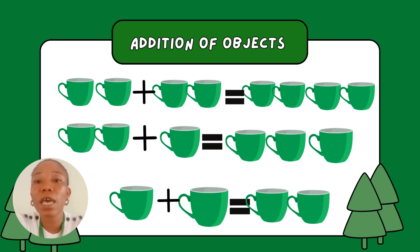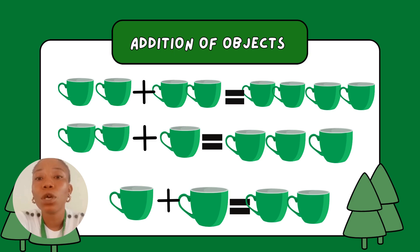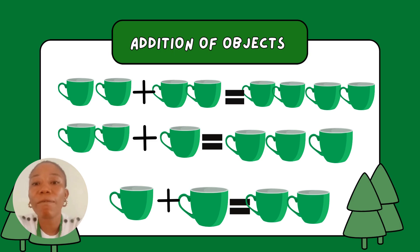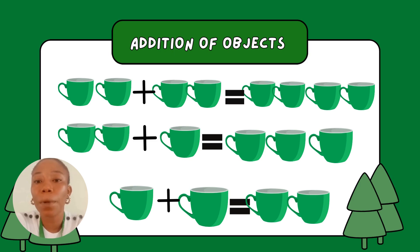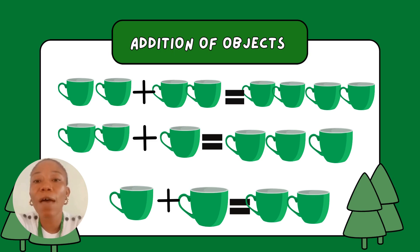The next one says two cups plus one cup. Let's count all the cups together: one, two, three. So we are having three cups. The next one is one cup plus one cup. Count everything together: one, two. So we are having two cups.